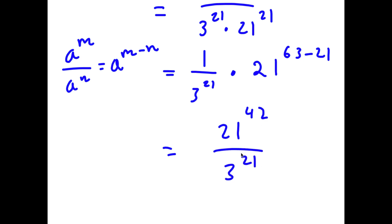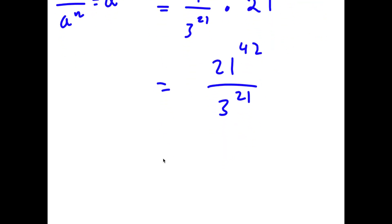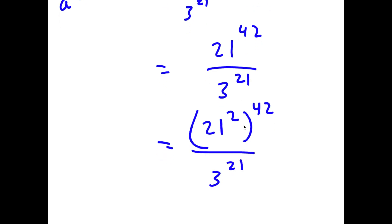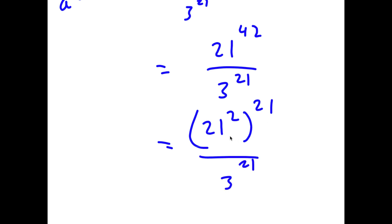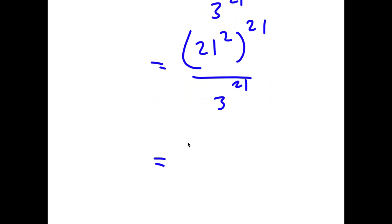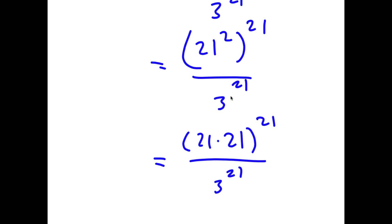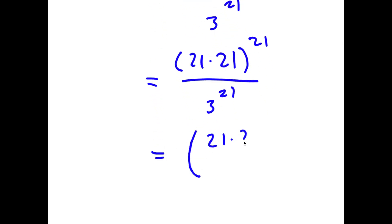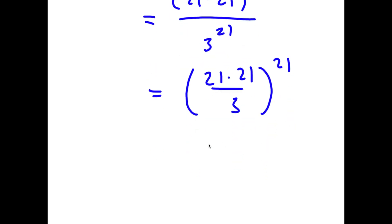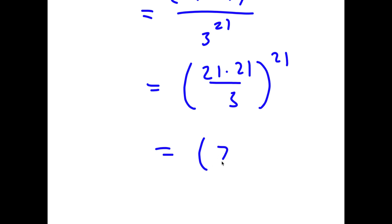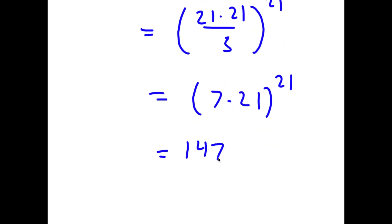Now I have 21 to the power of 42 over 3 to the power of 21. Now 21 to the power of 42 is the same thing as 21 squared to the power of 21, and 21 squared is 21 times 21. So I have 21 times 21 to the power of 21 over 3 to the power of 21, which equals 21 times 21 over 3, all to the power of 21. Since 21 divided by 3 is 7, I have 7 times 21 to the power of 21, which equals 147 to the power of 21.